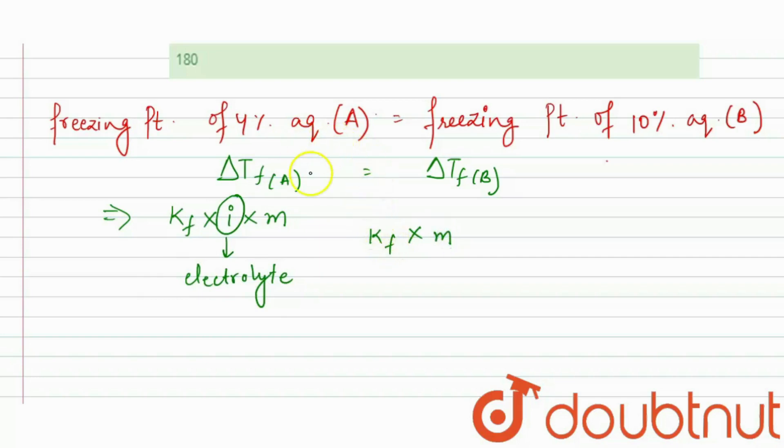If the freezing points are same and delta Tf values are same, then the Kf will also be same. So, we will only consider the molality.